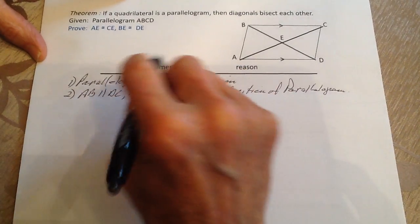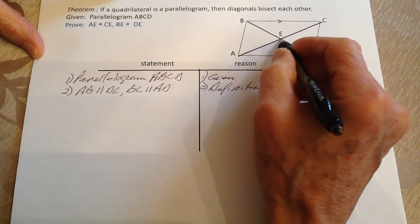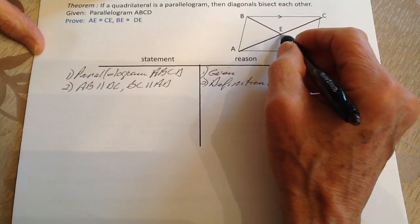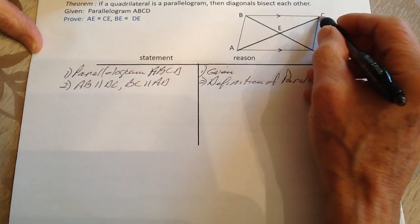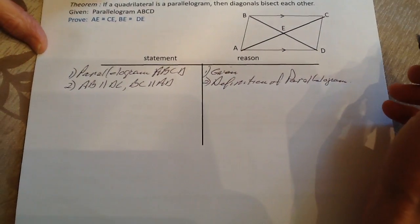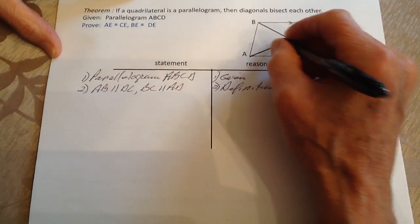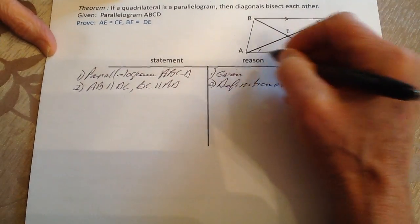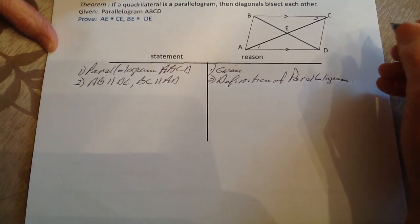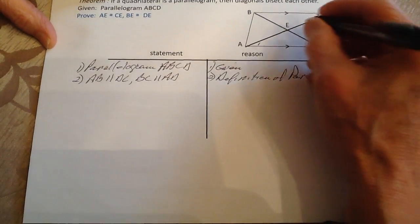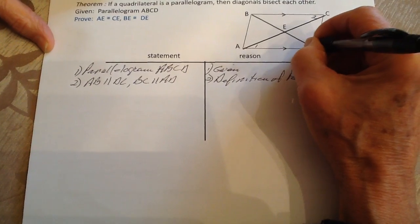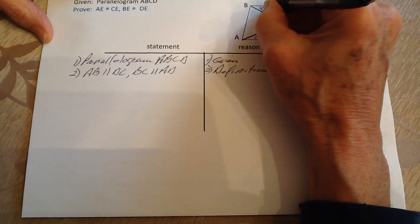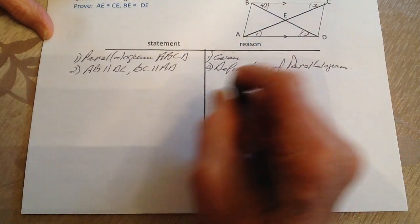The strategy is: how am I going to show AE equal to CE, and likewise BE equal to DE? One idea is to use the angles. We know that angle one is going to be equal to angle two because these are two parallel lines cut by a transversal. We also know that angle three is going to be congruent to angle four for the same reason. We'll put a double line here and a double line here, and a single line here and a single line here to mark the parallel lines.